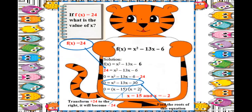Next example: the value of f of x itself is 24 — find the value of x. We have f of x equals x squared minus 13x minus 6. Substitute 24 for f of x on the left side, and copy the right side since no value of x is given yet — it's what we're solving for.